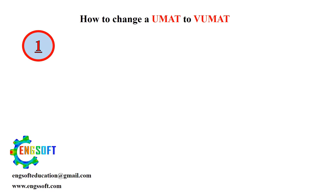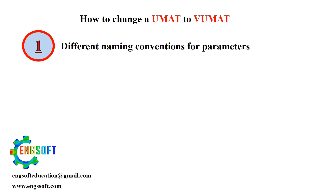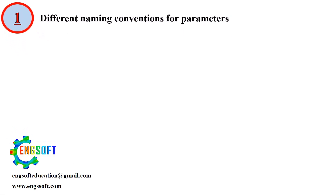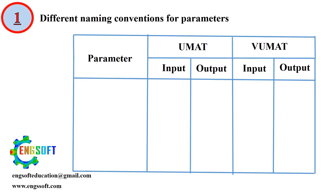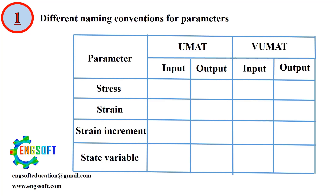1. Naming Conventions. The parameter naming conventions differ between U-MAT and VU-MAT. For example, in U-MAT, the stress tensor array is named stress — both input and output — while in VU-MAT, the input stress is stress_old and the output is stress_new.